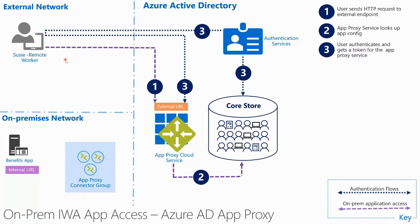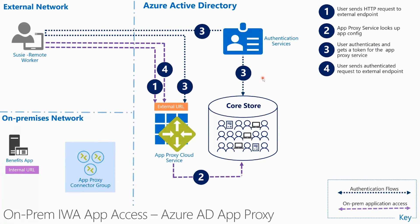After step three is completed, Susie's browser will receive a token and will be redirected to the external endpoint again. The App Proxy Cloud Service will validate the token and is now ready to reach back to the on-premises app in step four. At this point, we are transitioning to the on-premises world.